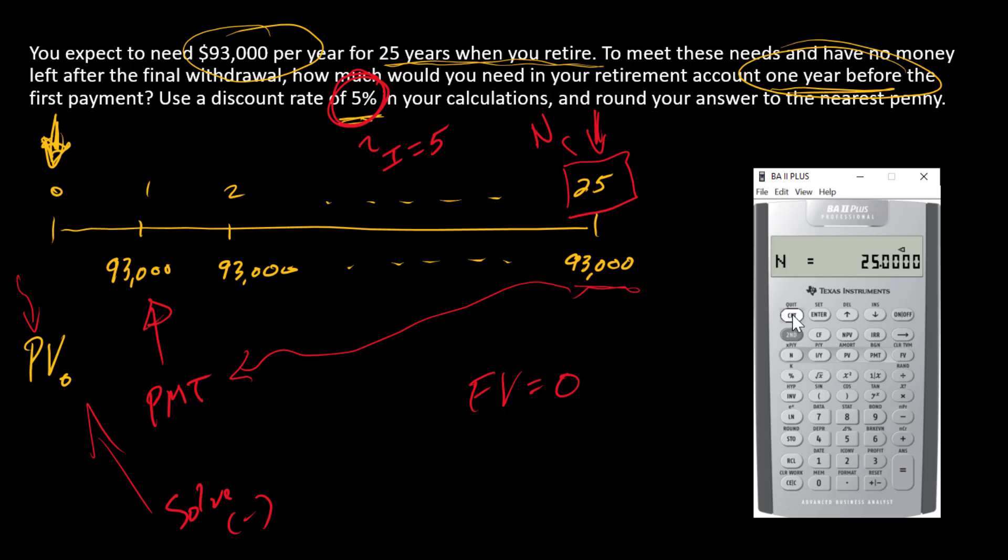We can compute the PV, and there is the answer: $1,310,736.84. Now, when you're giving me an answer like this, you're going to need to give it to me as a positive number.